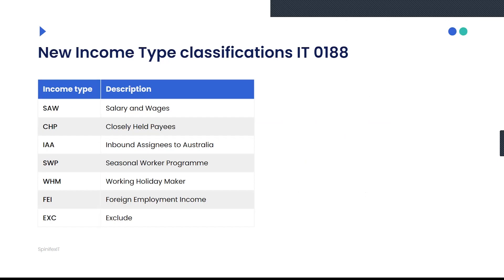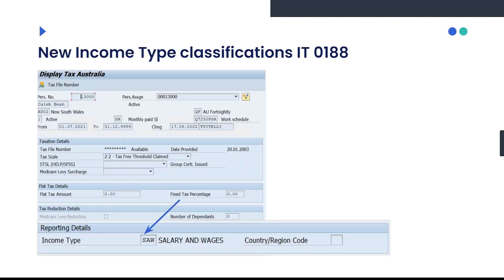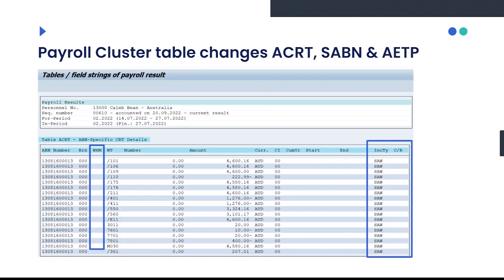They've also delivered new income type classifications in your InfoType 188 area, and those are shown on the screen now. Another screen just to show where these new income type classifications would reside in your InfoType 188. They will obviously also flow through to your ACRT cluster that holds information that gets reported through for Single Touch Payroll.